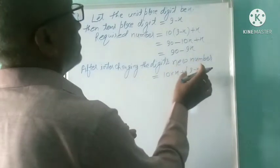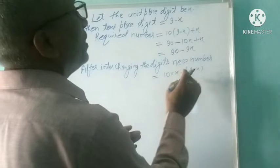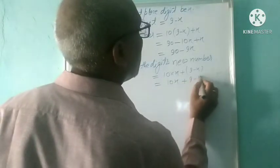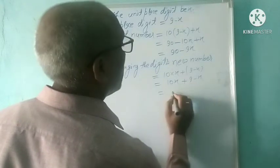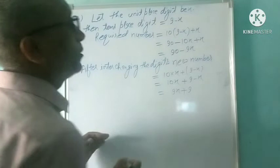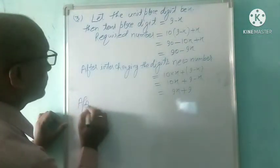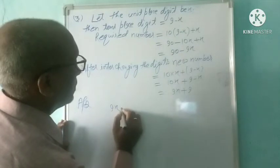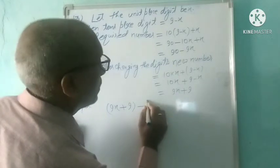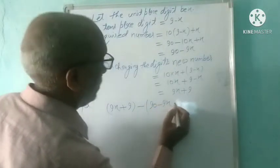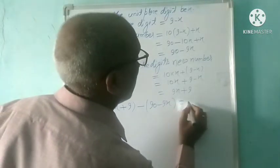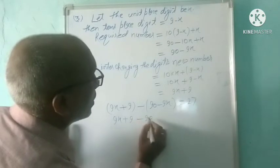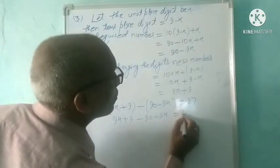Here we interchange the digits — unit place goes to tens place and tens place goes to unit place. You get 10x plus (9 minus x), that is equal to 10x minus x plus 9, which is 9x plus 9. According to the question, the new number is greater than the original number by 27. So 9x plus 9 minus (90 minus 9x) is equal to 27. That gives 9x plus 9 minus 90 plus 9x is equal to 27.